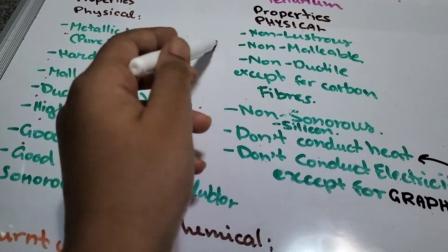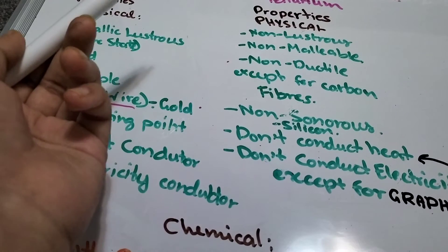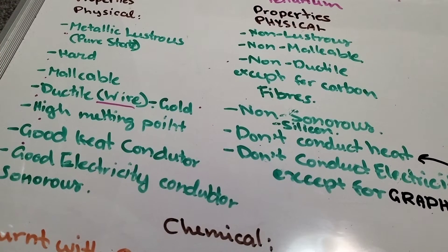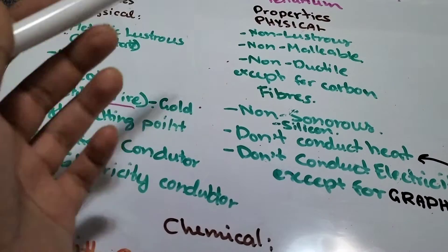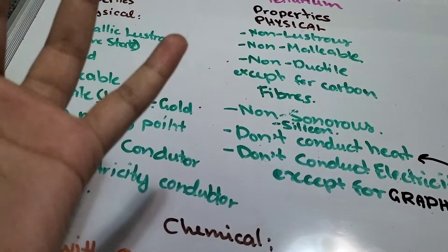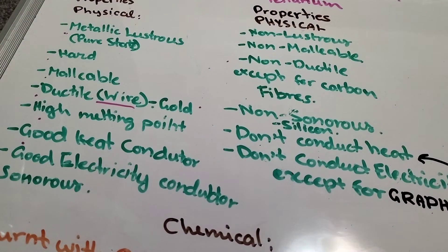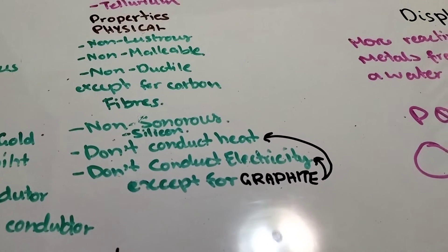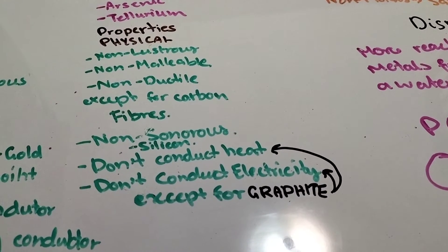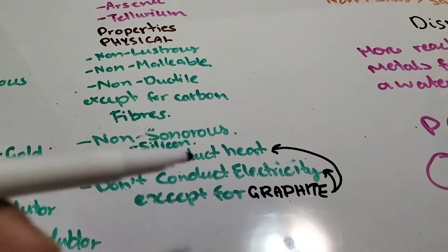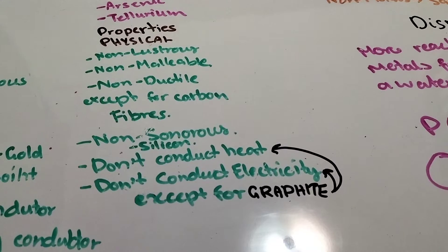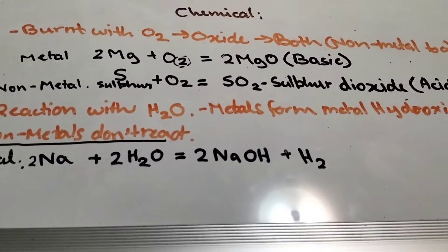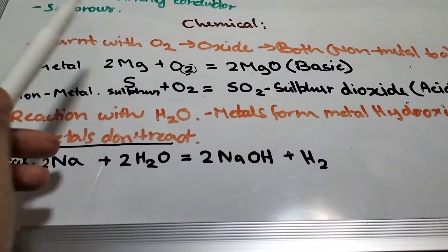Physical properties of non-metals: they are non-lustrous, non-malleable, and non-ductile — meaning they can't be drawn into a wire, except for carbon fibers which we do use to make wires. There will be some exceptions. They are non-sonorous, meaning they don't make a sound when you hit them — silicon is one example. They don't conduct heat and don't conduct electricity, except for graphite, which does conduct both heat and electricity.